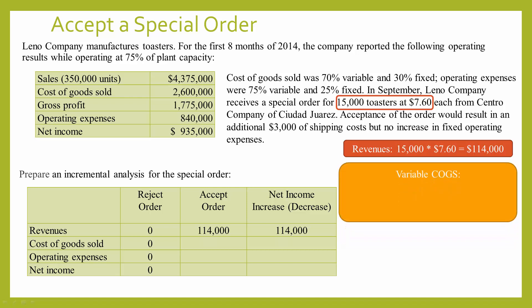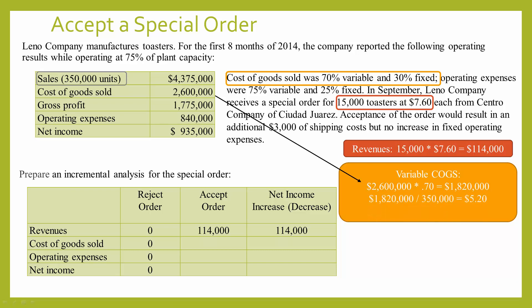Next, we need to look at expenses. The problem tells us there will be no increase in fixed operating expenses, so we only need to find the variable costs. Cost of goods sold was 70% variable, and their current cost of goods sold is $2.6 million. Multiplying $2.6 million by 70% gives variable costs of $1,820,000. Dividing by the 350,000 units produced and sold, the variable cost per unit is $5.20. For the special order of 15,000 toasters, variable cost of goods sold would be $78,000 — a negative impact on net income.